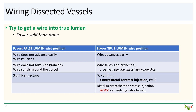Ideally, if there are pre-existing collaterals, you can get contralateral access to do contralateral injections, as you would do for CTO interventions, to establish whether you are in the true lumen or not. IVUS can help, but the IVUS catheter can itself enlarge the dissection plane. Many of us do a distal microcatheter contrast injection, but this is actually fairly risky, because if it turns out you're in the false lumen, your contrast injection has just dramatically enlarged the dissection.